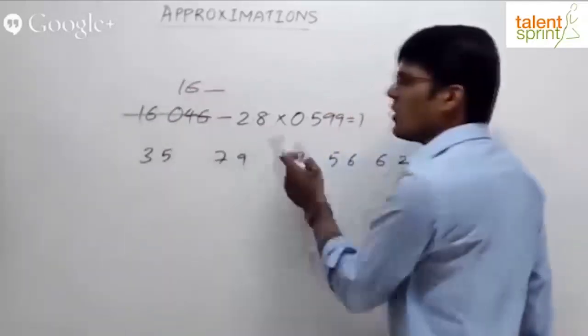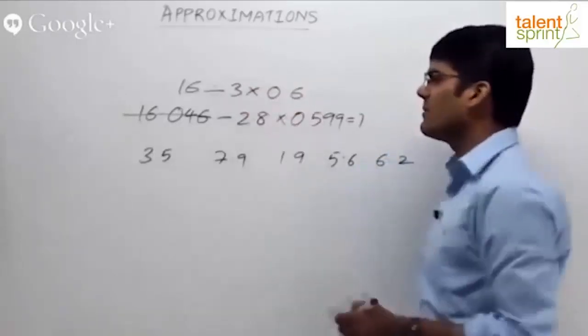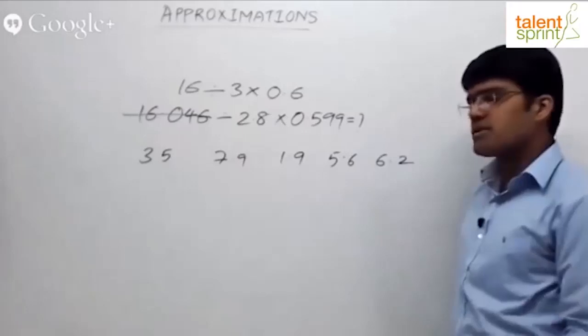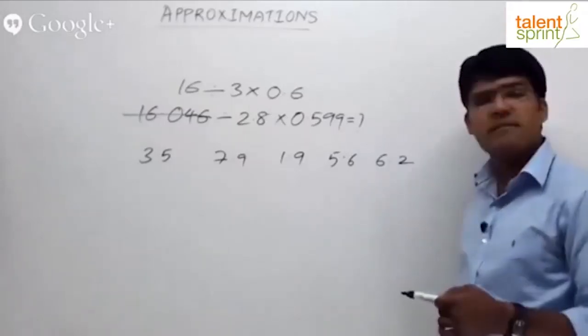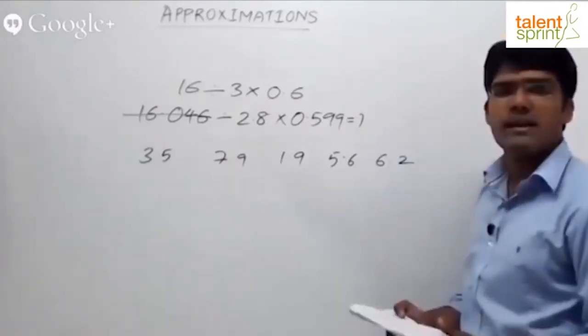Divided by 2.8 is 3, into 0.599 is taken as 0.6. Get the point? The options you know are very far away - 3.5, 7.9, 1.9, 5.6, 6.2 - nowhere close to each other, so I can definitely go for that kind of calculation.